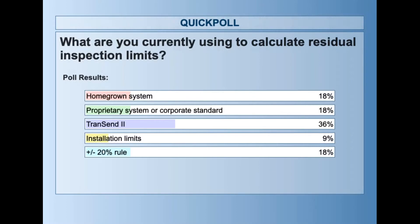The poll results show 18% using a homegrown system, 18% proprietary system or corporate standard, 36% using Transcend 2, 9% installation limits, and 18% the plus or minus 20% rule. Thank you very much for participating. Now I'd like to turn the presentation over to Pete Stigman.